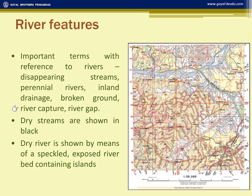River capture and river gap — this is connected with river erosion but may not be seen in this dry region. Dry streams are all shown in black. All these rivers are dry and shown in black, meaning the whole area gets seasonal rainfall.